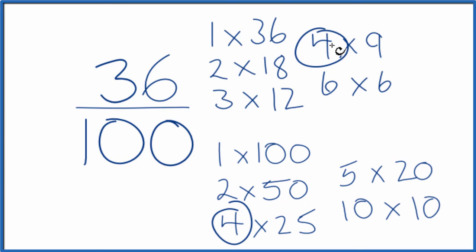So we'll divide 36 by 4, we'll divide 100 by 4, and we'll simplify 36 over 100. Let's move these over here.